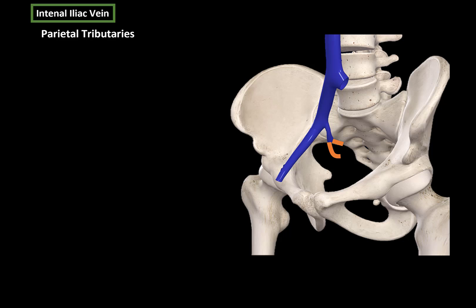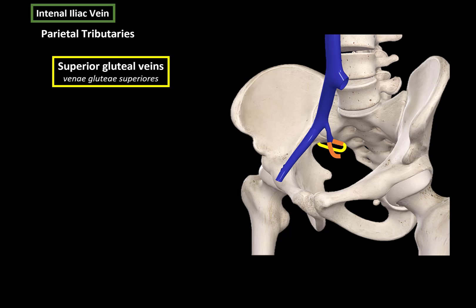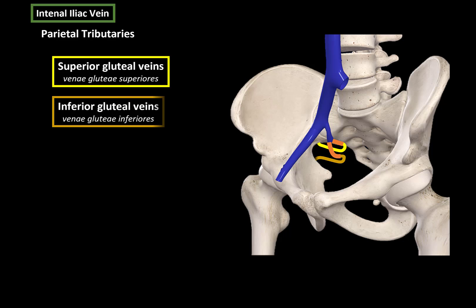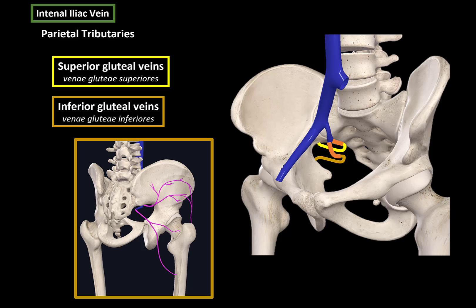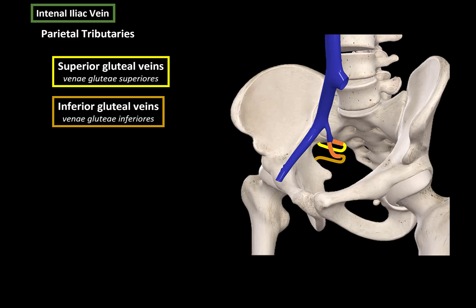The first two parietal tributaries are the superior gluteal vein and the inferior gluteal vein, which go back towards the gluteal muscles. The superior one mainly drains the gluteus medius, gluteus minimus, and tensor fascia lata, while the inferior one mainly drains the gluteus maximus. Then we have the obturator vein, which drains the medial compartment of the thigh muscles.